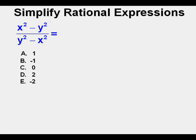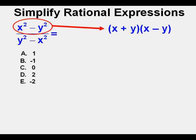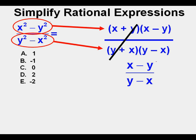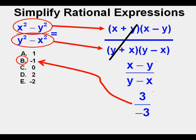Now an SAT-type multiple choice problem: x squared minus y squared over y squared minus x squared. We could plug in numbers, but let's use the difference of squares. The numerator x squared minus y squared becomes quantity x plus y times quantity x minus y. The denominator y squared minus x squared becomes quantity y plus x times quantity y minus x. Quantity x plus y cancels quantity y plus x, leaving x minus y over y minus x. Whatever the number in the numerator, the denominator is the negative of that same number — like 3 over negative 3 — which simplifies to negative 1, answer choice b.